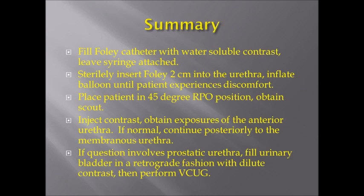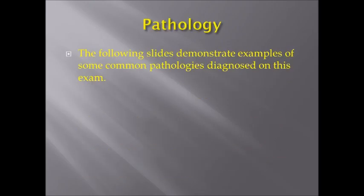In summary: fill the Foley with contrast and leave the syringe attached. Sterilely insert the Foley 2 cm into the urethra and inflate the balloon until the patient experiences discomfort. Place the patient in the 45-degree right posterior oblique position and obtain a scout image. Fluoro while you inject the Foley and take single exposures to document the normal course of the urethra or to document any findings. If the clinical question involves the prostatic urethra, continue to fill the bladder and perform a voiding cystourethrogram.